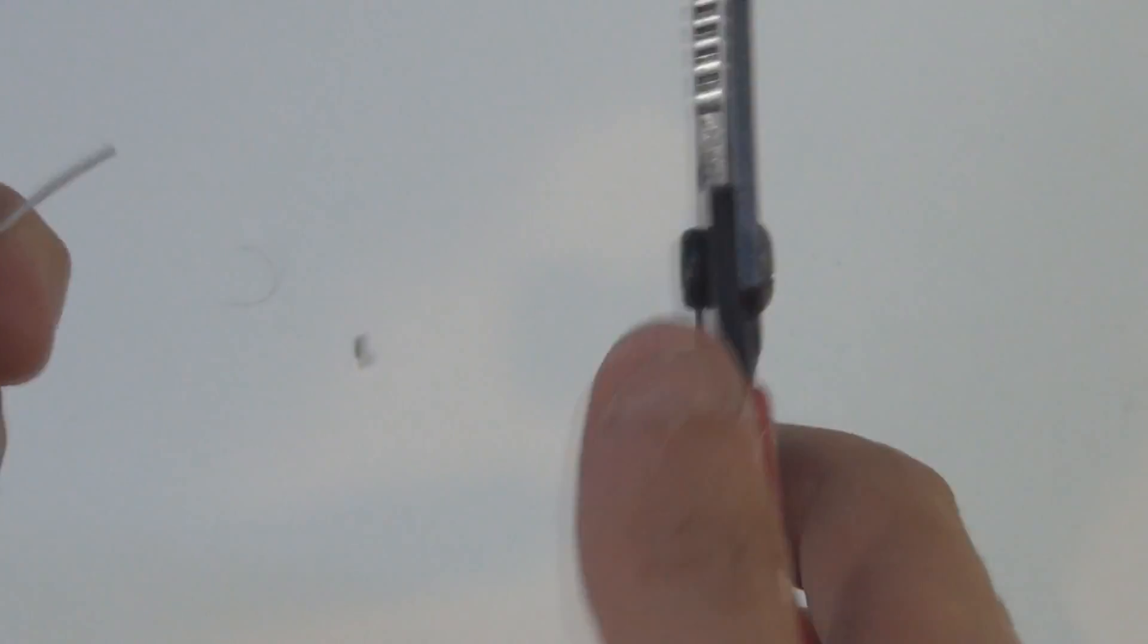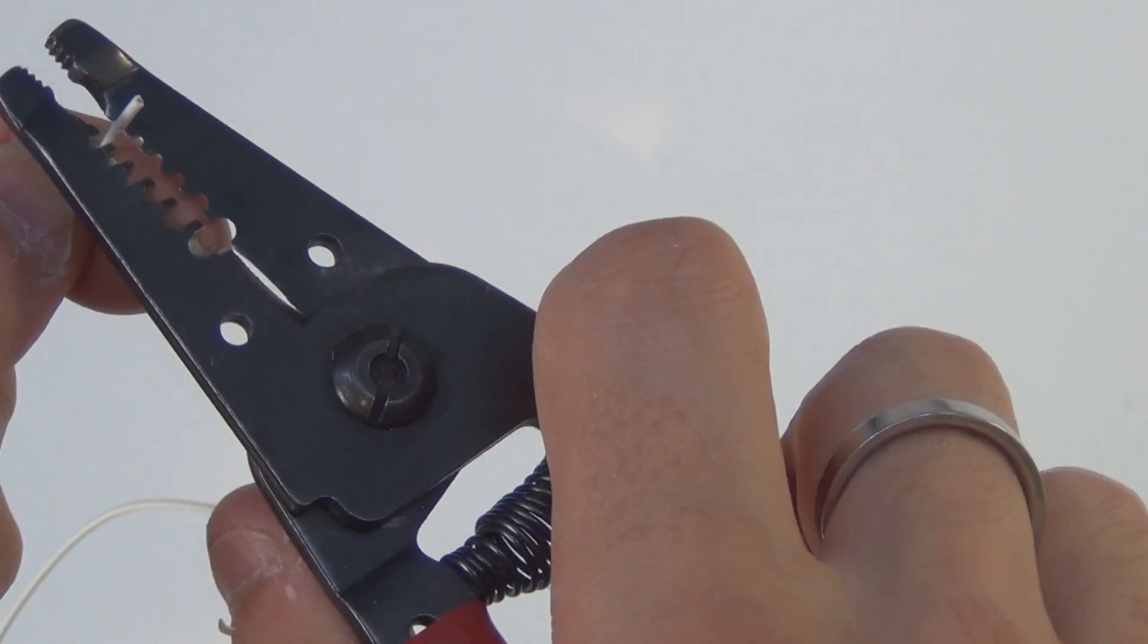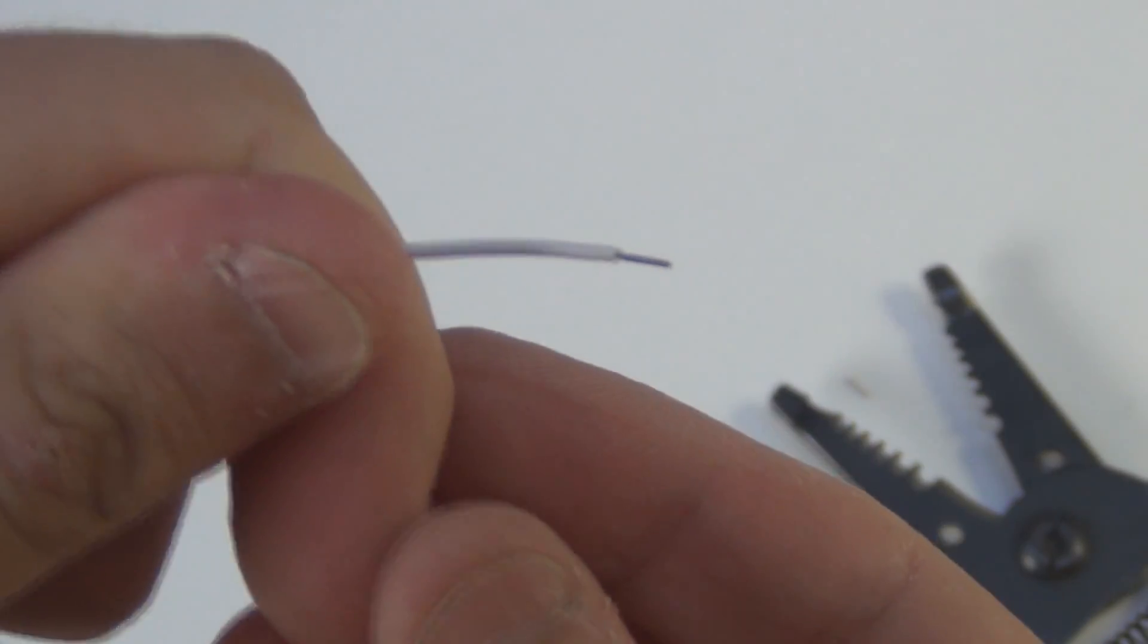So here we have the old side cutters, and I'm just going to show you how you would do it with these. You put the wire in, I think I usually use the first one, and you pull it off like that. That's pretty straightforward. Not that hard.